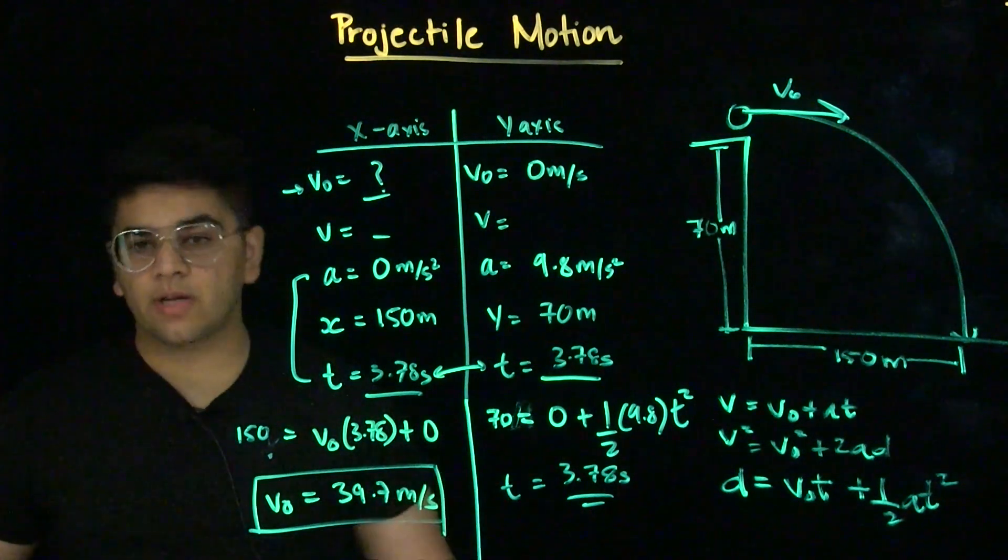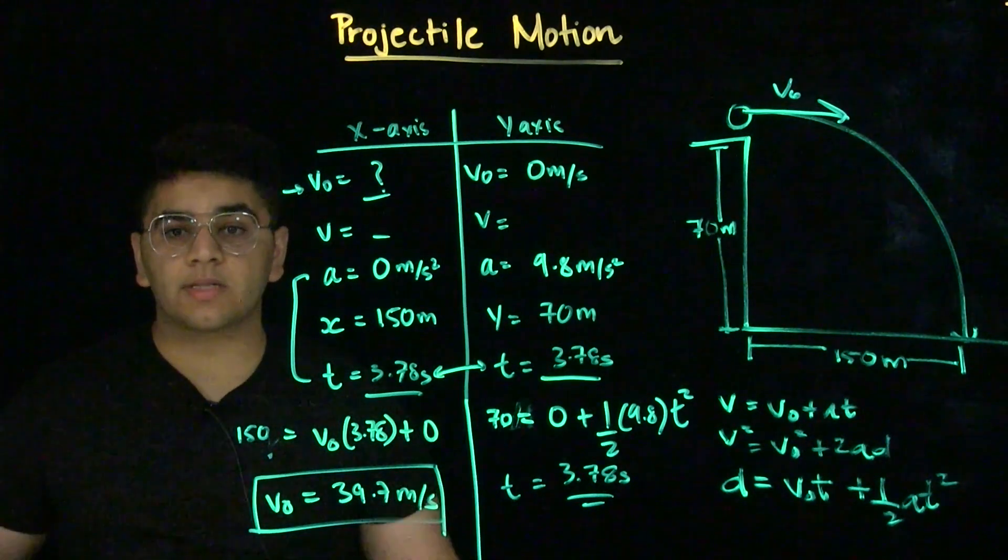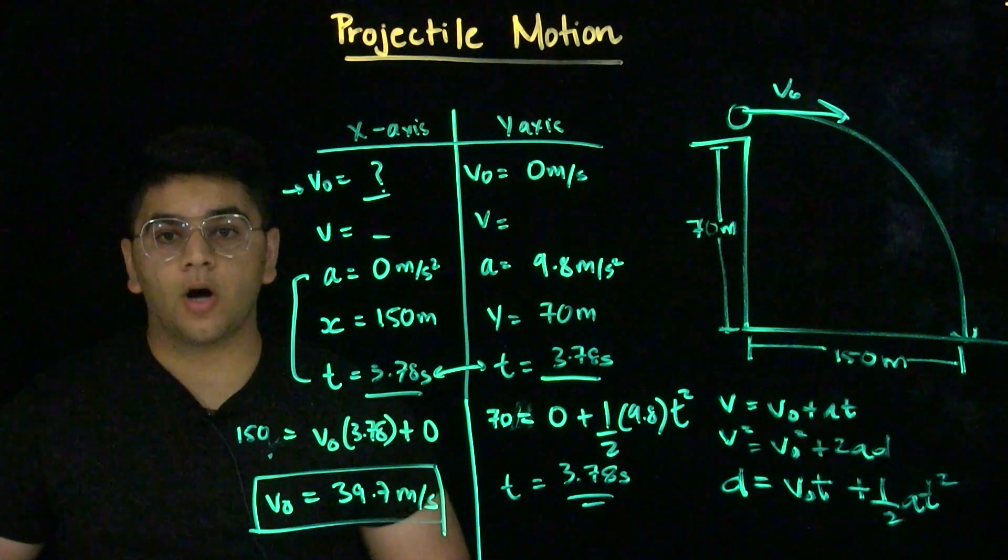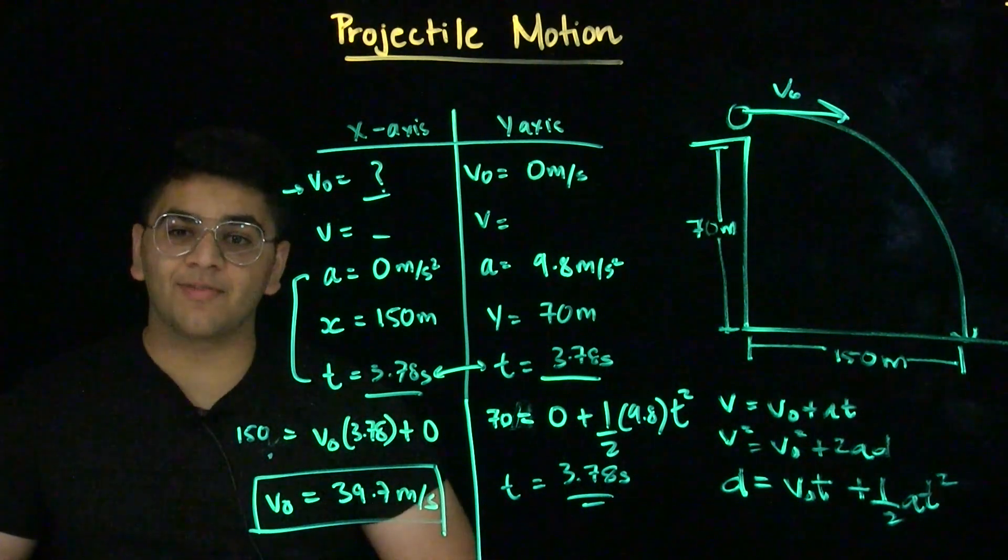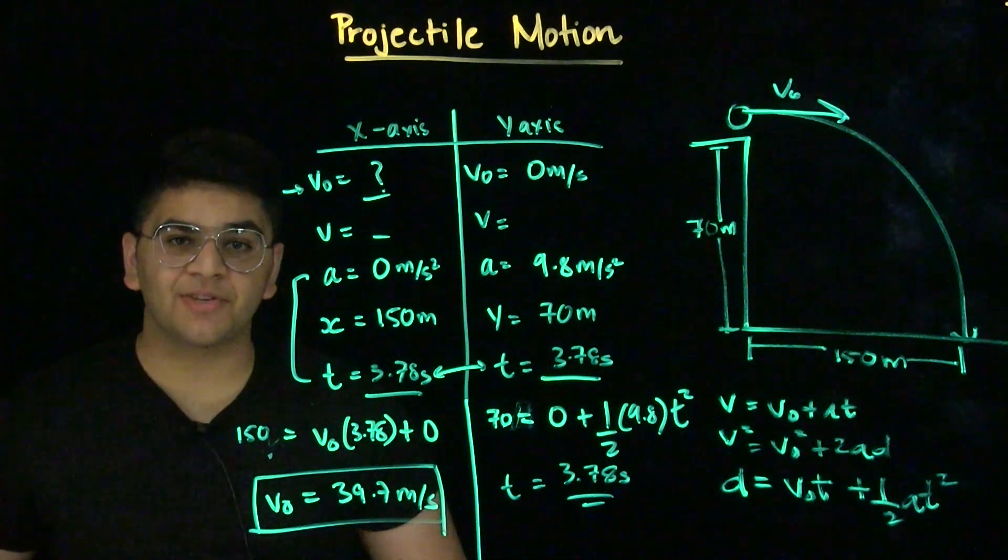You can name these variables however you seem fit or is more comfortable for you. But this is the best approach to take whenever you're dealing with projectile motion problems. Always split up the axes and then solve for the variables in each axis separately. Thank you for watching and see you for the next video.